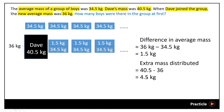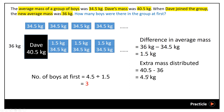So in other words, we know that this 4.5 kg has to be distributed among the boys, and we know that as a result of Dave being included, the average mass increases by 1.5 kg. So in order to find the number of boys at first, all we need to do is take 4.5 divided by 1.5, and this gives us the answer of 3.